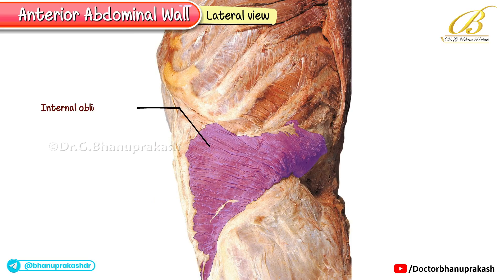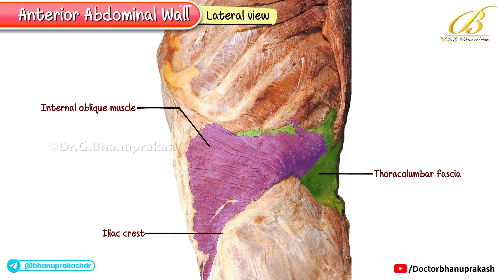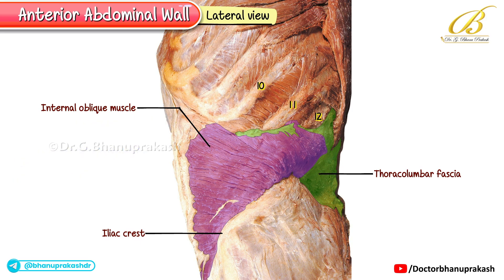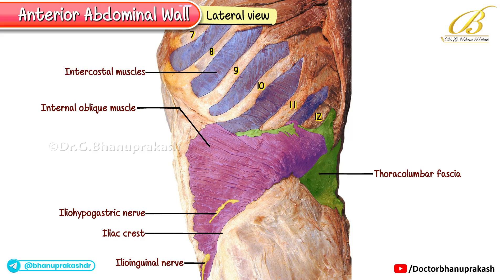In this lateral view, the internal oblique muscle is well demonstrated. You can clearly see that it takes its origin from the iliac crest as well as the thoracolumbar fascia. As we follow its fibers posteriorly, notice that they insert into the inferior borders and tips of the lower three ribs along with their cartilages. This arrangement helps in stabilizing the lower ribs and also plays a role in respiration. Importantly, both the iliohypogastric nerve and the ilioinguinal nerve are shown piercing through the internal oblique muscle. Also in this image, the lower six ribs — from the seventh to the twelfth — are well displayed, along with the intercostal muscles that occupy the spaces between them.